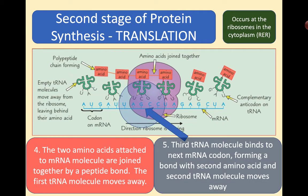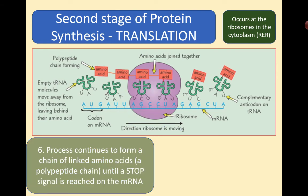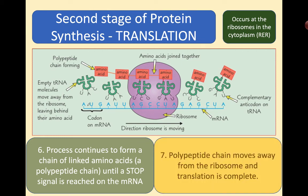A third transfer RNA molecule binds the next codon — UCG codes to AGC — and brings along its amino acid. So we've got a chain being formed. The bond of the second amino acid forms, and the second transfer RNA molecule moves away to pick up another amino acid. The process continues to form a chain of linked amino acids — a polypeptide chain — until a stop signal is reached on the messenger RNA. One of the triplets will signify a stop, and the polypeptide chain moves away from the ribosome. Translation has now been completed.